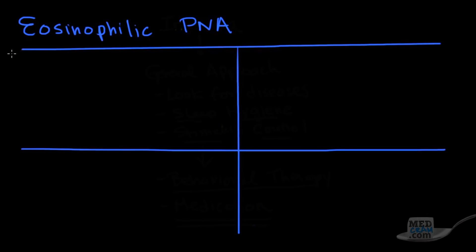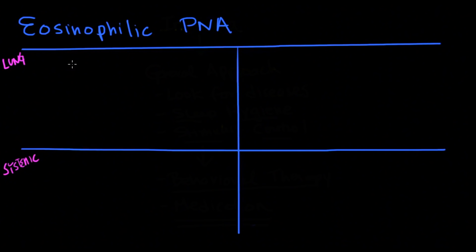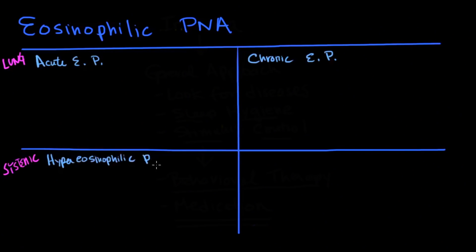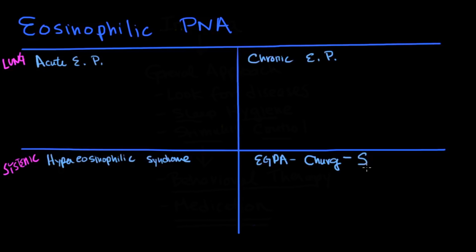Let's name the primary eosinophilic pneumonias. I'm going to divide them into two categories: lung and systemic — two in the lungs and two that are systemic. The first is acute eosinophilic pneumonia, then chronic eosinophilic pneumonia, then hypereosinophilic syndrome, and finally EGPA — eosinophilic granulomatosis with polyangiitis — otherwise known as Churg-Strauss. These are our four diseases.